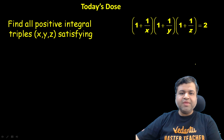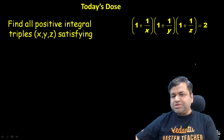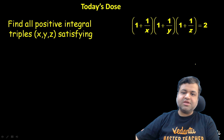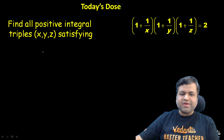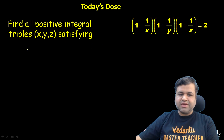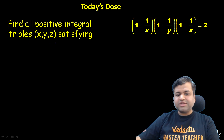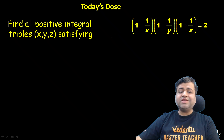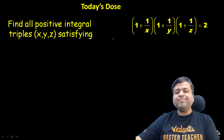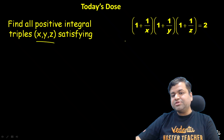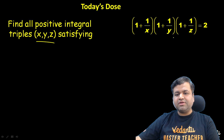In ISI UGA there is a similar question, and in JEE there is a simple algebra-based question. Let's see the question. The question says: find all the positive integral triples (x, y, z) satisfying this equation. We will state whatever solutions — ordered triples — satisfy this equation.